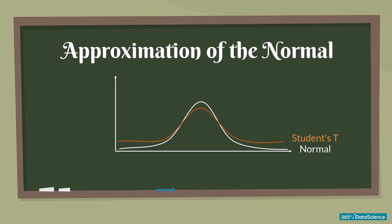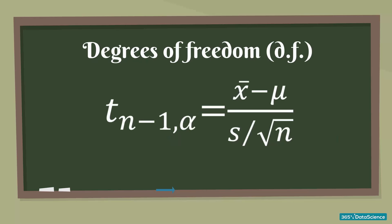The last characteristic of the Student's t statistic is that there are degrees of freedom. Usually for a sample of n, we have n minus 1 degrees of freedom. So for a sample of 20 observations, the degrees of freedom are 19.